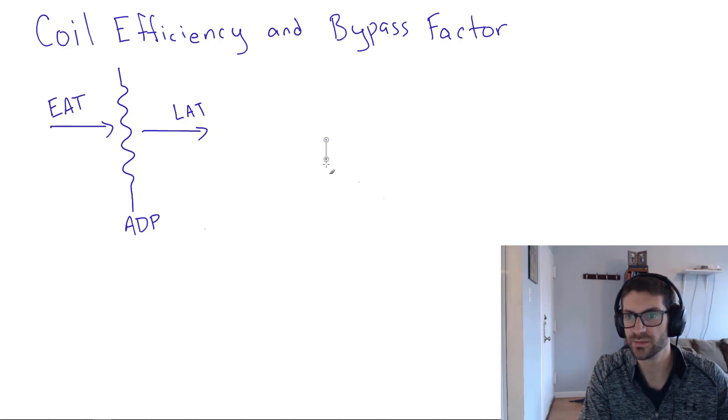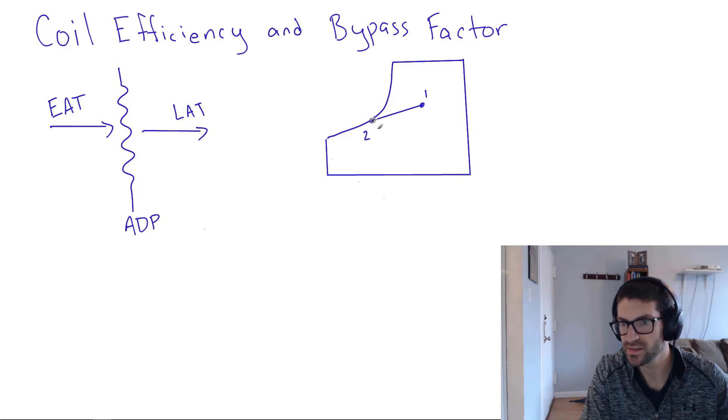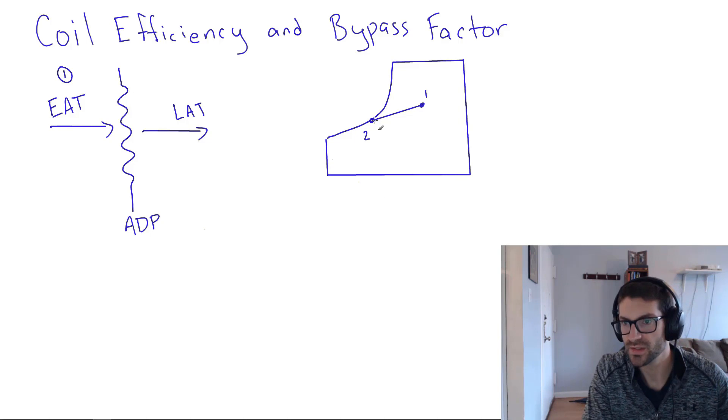And to illustrate that, we can use psychrometric chart. So let's imagine we're starting at some state one and our goal is to cool down to some state two. Well, that's pretty idealistic. That supposes that we're going to be able to cool all the way from that entering air temperature, that's our state one, down to state two, where state two is on the saturation curve. So that would be the apparatus dew point.